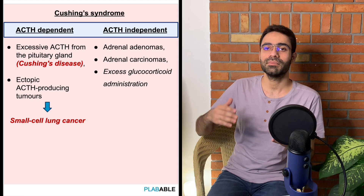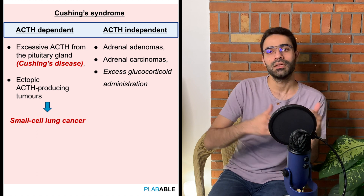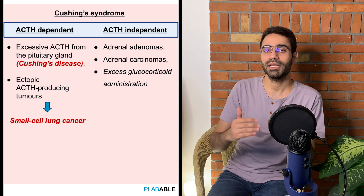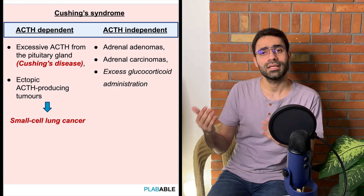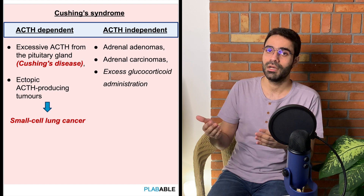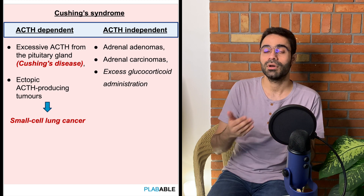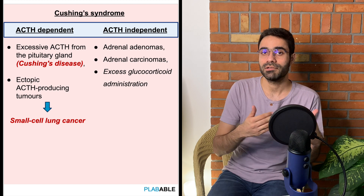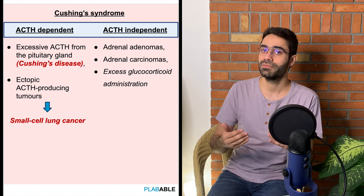Cushing syndrome can be classified into ACTH dependent and ACTH independent. Causes for ACTH dependent Cushing's include tumors of the pituitary gland or ectopic production of ACTH from a neuroendocrine tumor, most commonly small cell cancer of the lung. Causes for non-ACTH dependent Cushing's include adrenal adenomas, adrenal carcinomas, or exogenous administration of glucocorticoids.